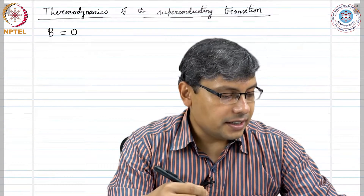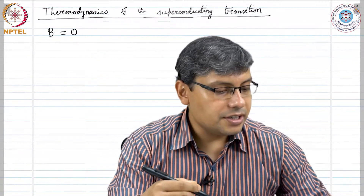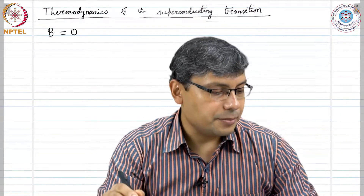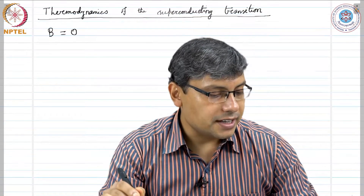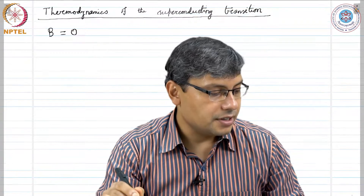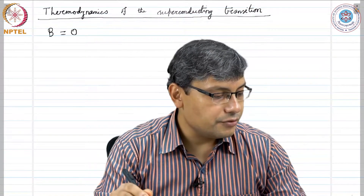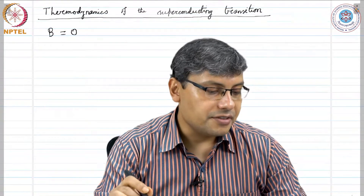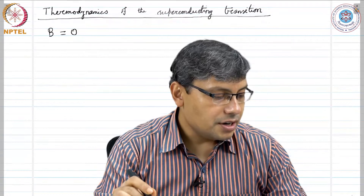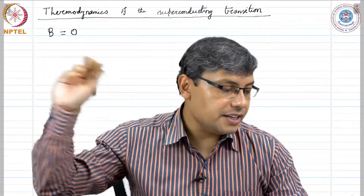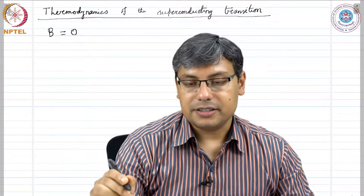In the magnetic method, the stabilization free energy is found from the value of the applied magnetic field that will destroy the superconducting state at a constant temperature. Let us consider the work done on a superconductor which is brought reversibly at constant temperature from a position at infinity to a position r in the field of a permanent magnet.